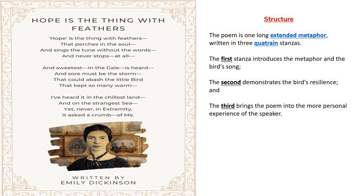Now coming to the structure of the poem. The poem is one long extended metaphor written in three quatrains — quatrain meaning four lines in a stanza. The first stanza introduces the metaphor and the bird song. The second demonstrates the bird's resilience — how strong the bird and its tune, meaning hope's tune, really is. Then the third brings the poem into the more personal experience of the speaker, because she has undergone that experience herself — 'never in extremity it asked a crumb of me.' In return it did not ask. So this is how the poem is structured.